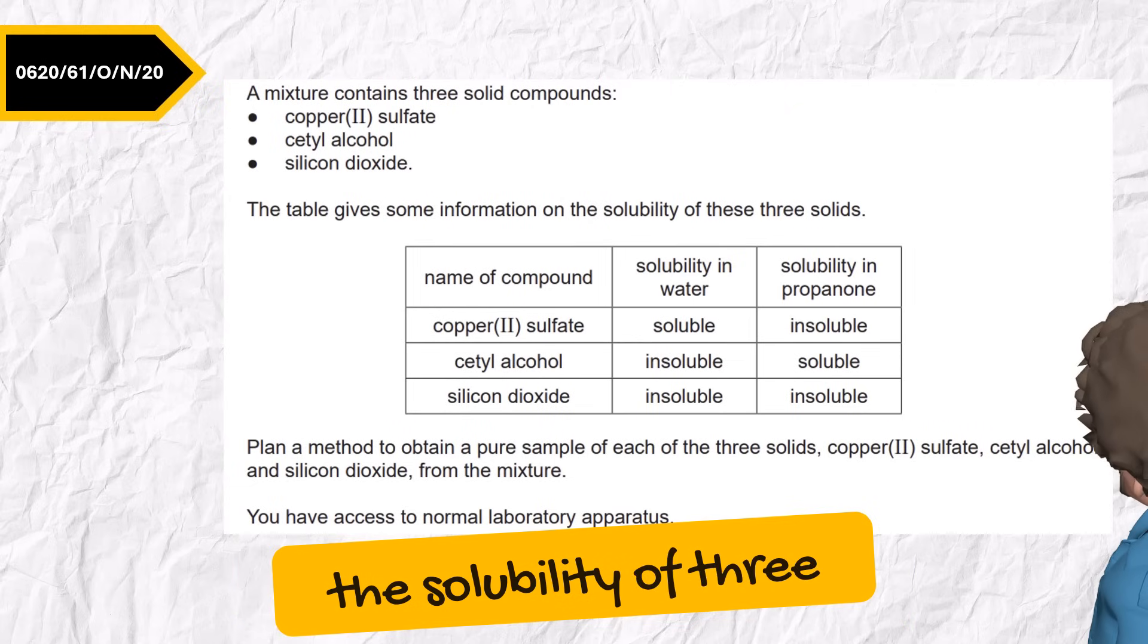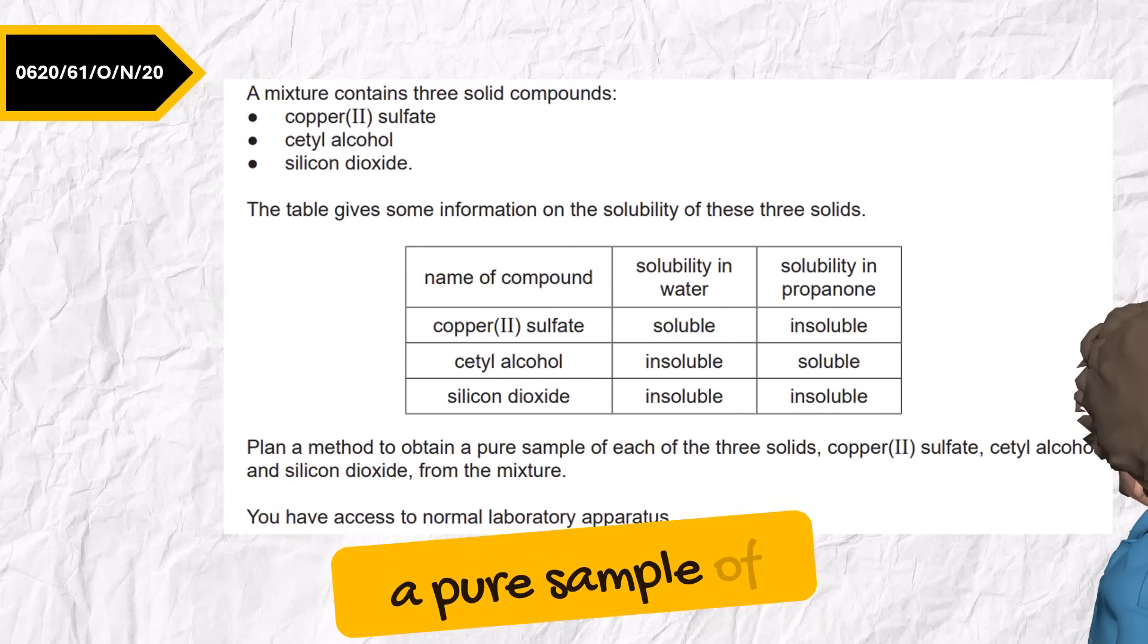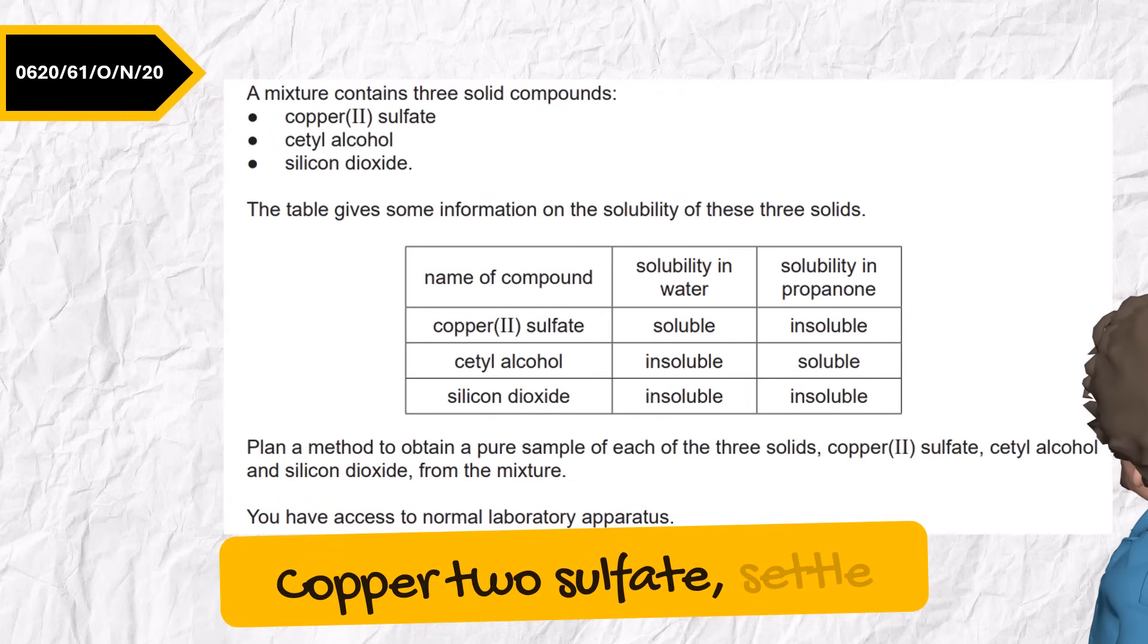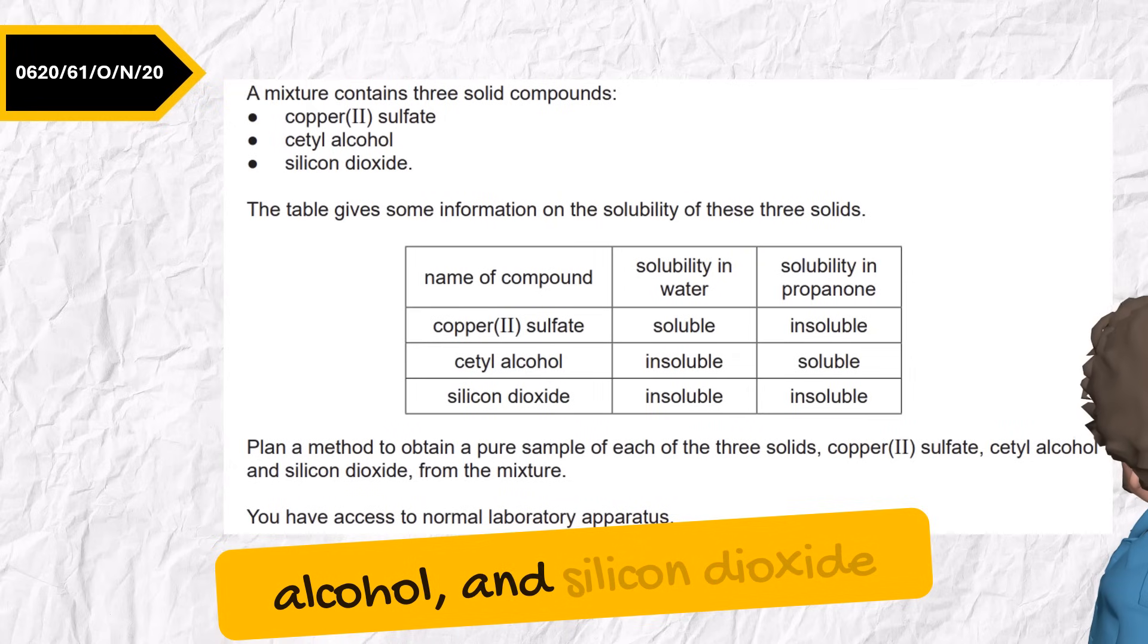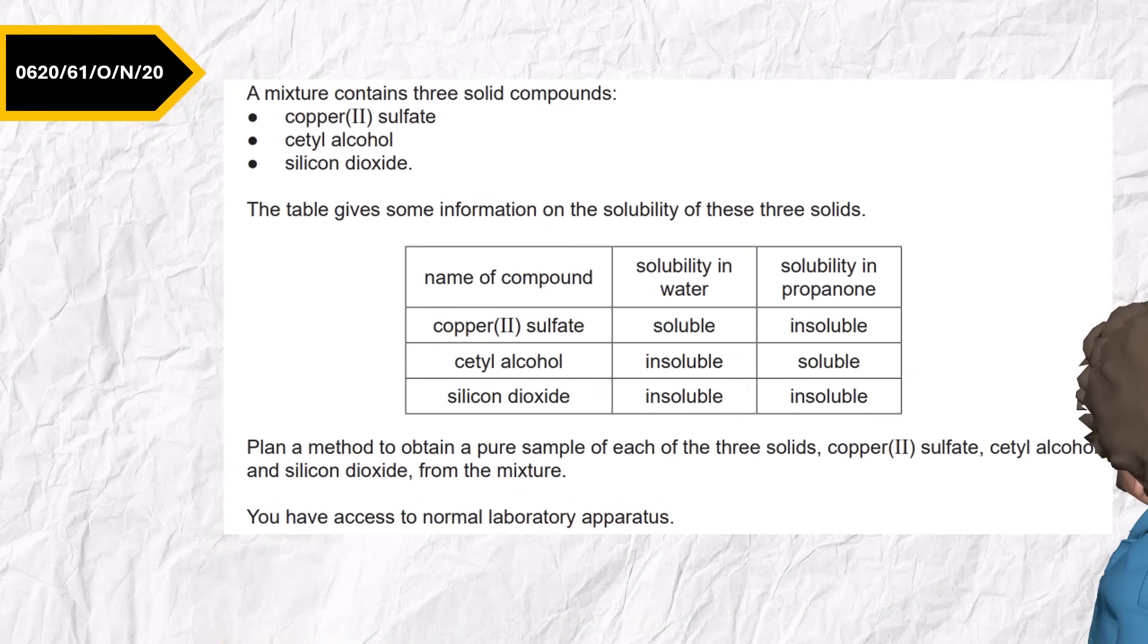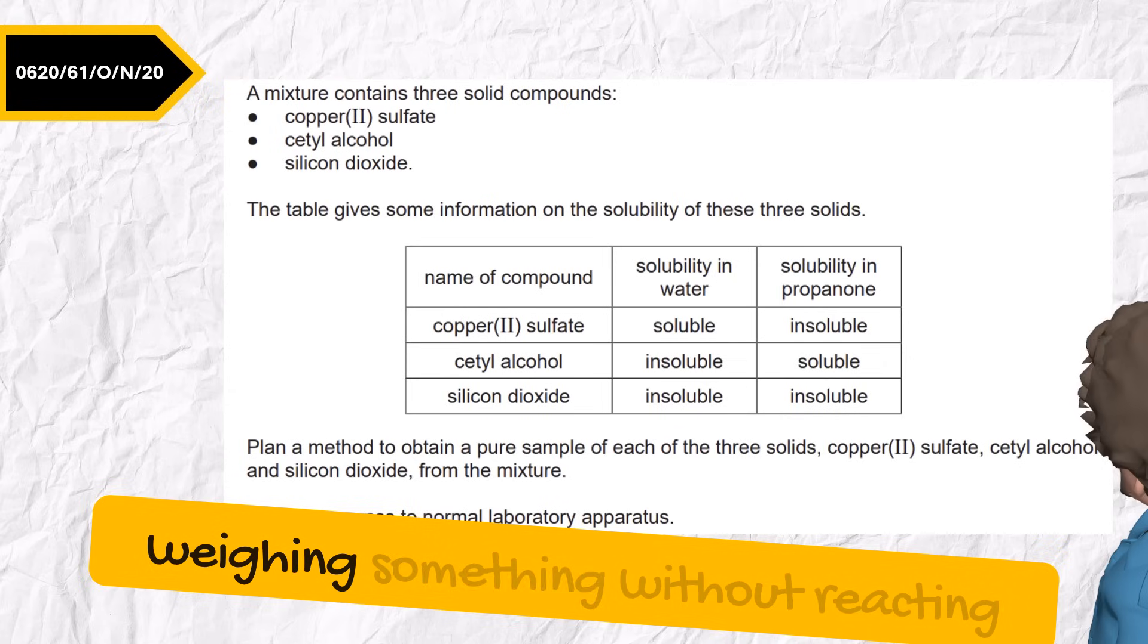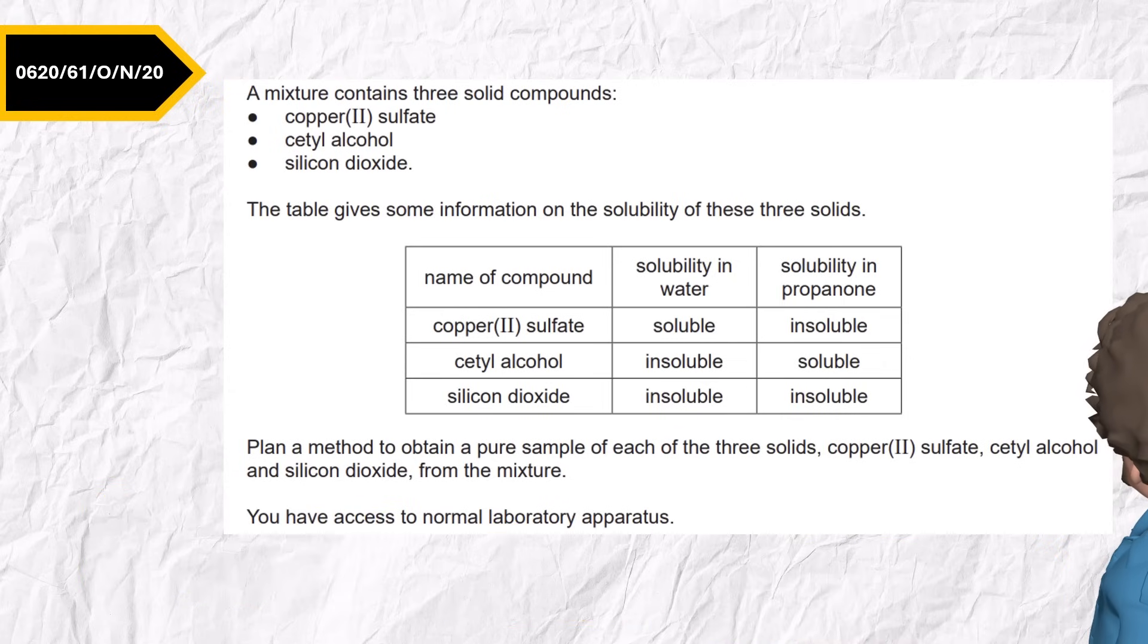November 2020, variant 1. They give information on the solubility of three solids and ask, Plan a method to obtain a pure sample of each. Copper 2 sulfate, settle alcohol, and silicon dioxide. Ask the question, Are you just filtering and weighing something without reacting it? Yes. So it's a purity test.